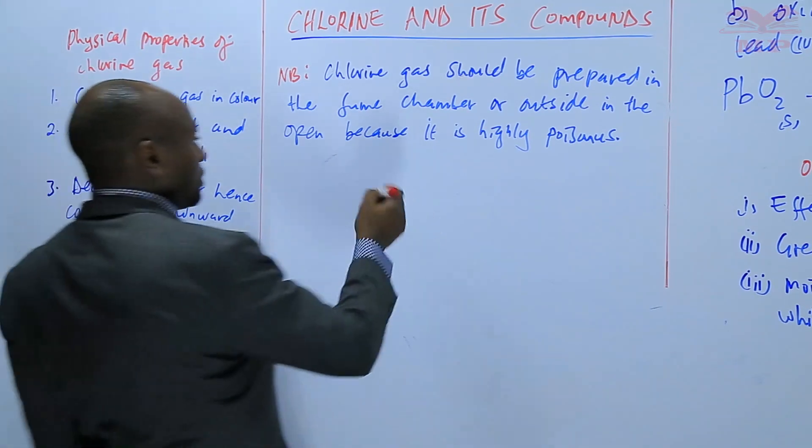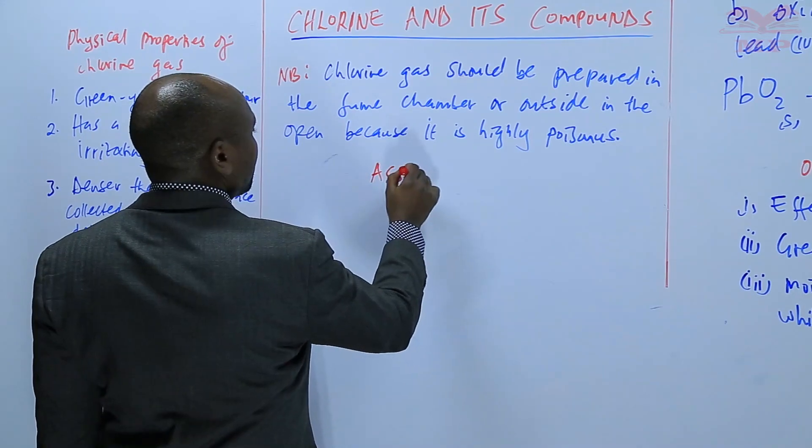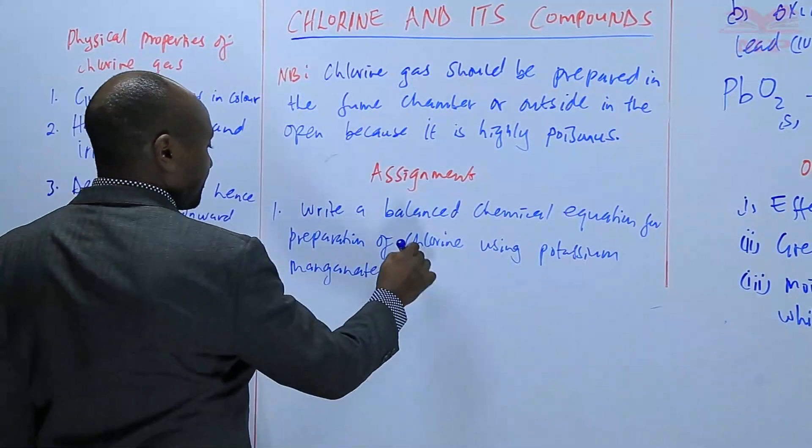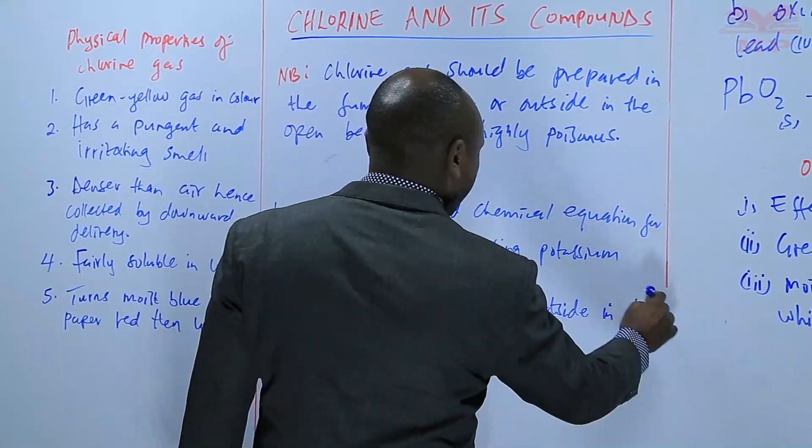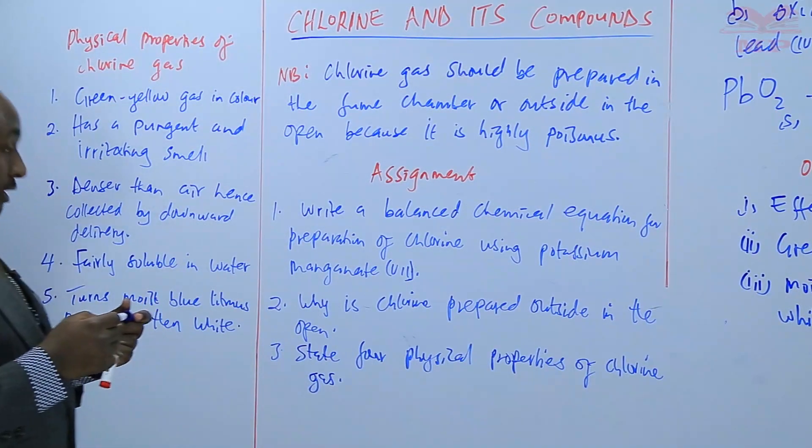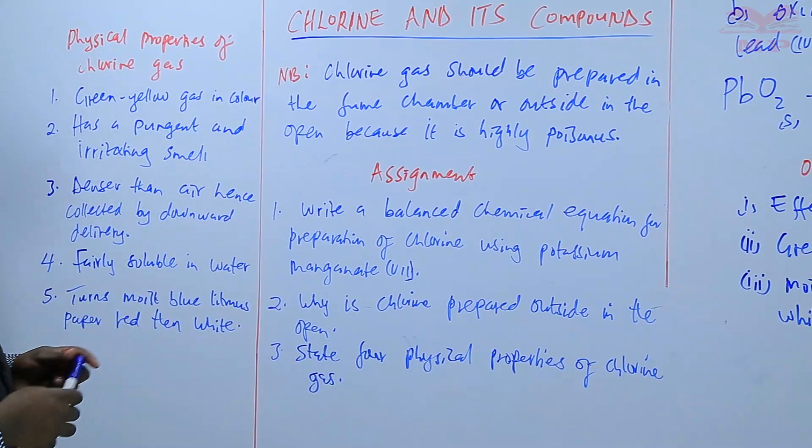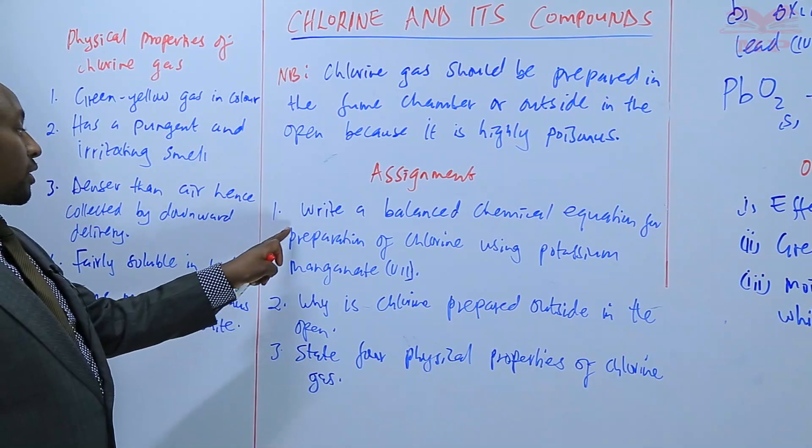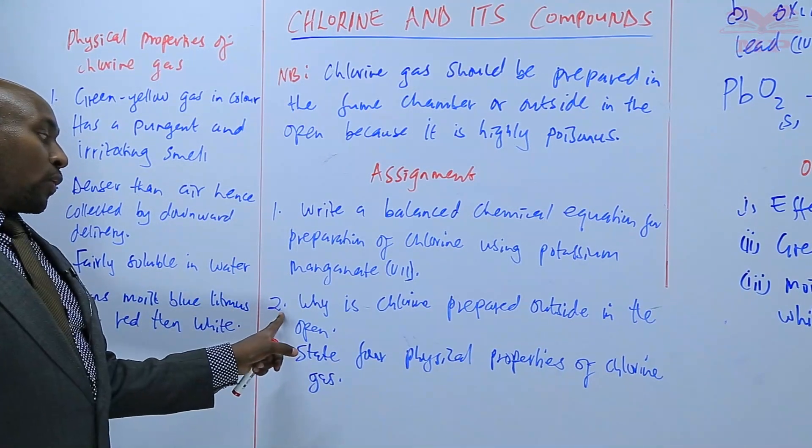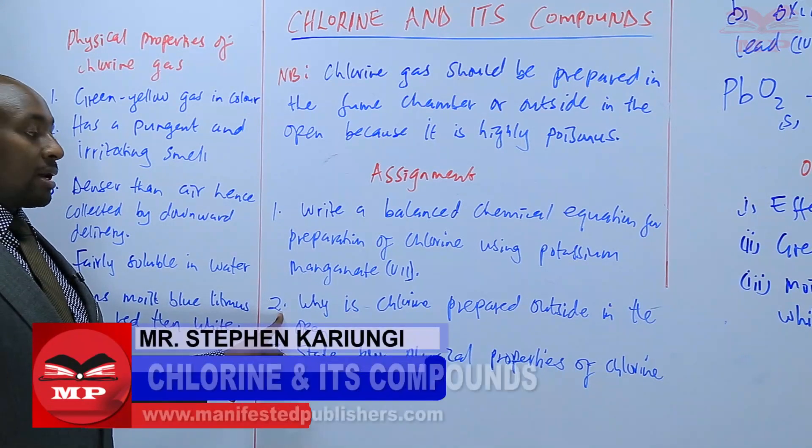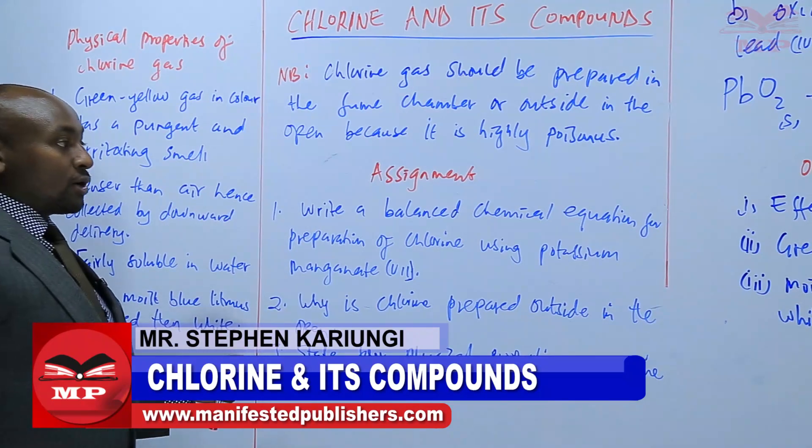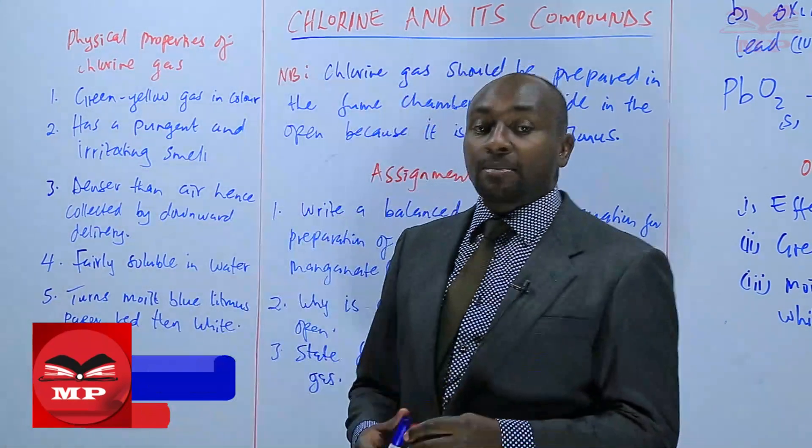We'll have an assignment on what we have discussed. The first question: write a balanced chemical equation for preparation of chlorine using potassium manganate seven. Number two: why is chlorine prepared outside in the open? And lastly, number three: state four physical properties of chlorine gas. We'll stop there until next time. Goodbye.